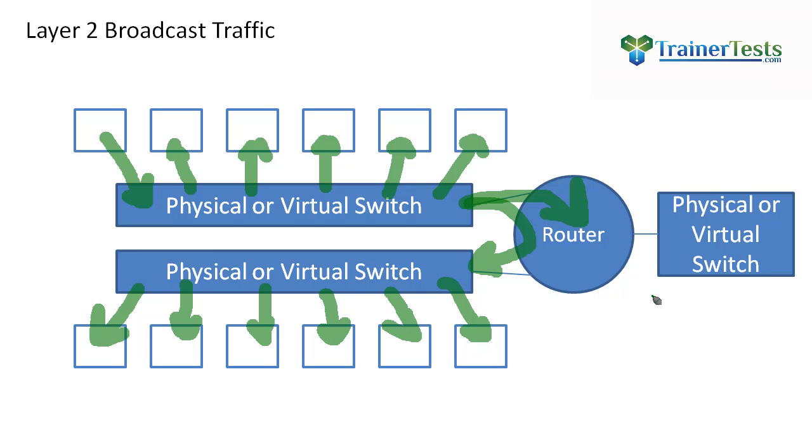The router will receive that Layer 2 broadcast because the router is also connected to that Layer 2 network. However, that's the end of it. The router does not ever pass Layer 2 broadcast traffic out to other network segments. So that's kind of the limiting factor in our physical or virtual network to those Layer 2 broadcasts is when they hit a router, they stop there.